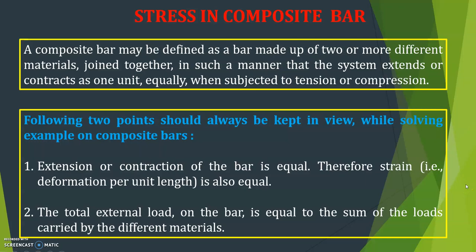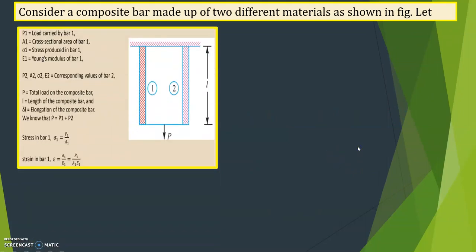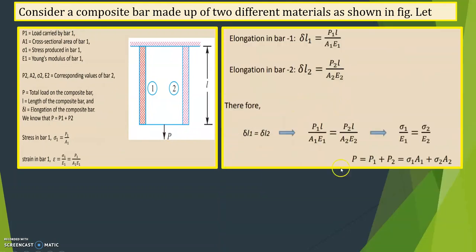So these two points you have to remember. First: extension or contraction of the bar is equal. Second: the total external load on the bar is equal to the sum of the loads carried by the different materials. Now let us consider a composite bar made up of two different materials as shown in the figure — suppose this is steel and this is copper.